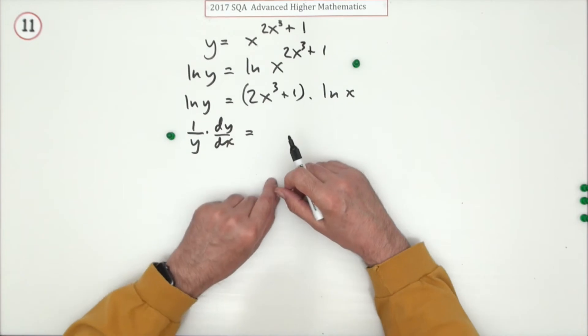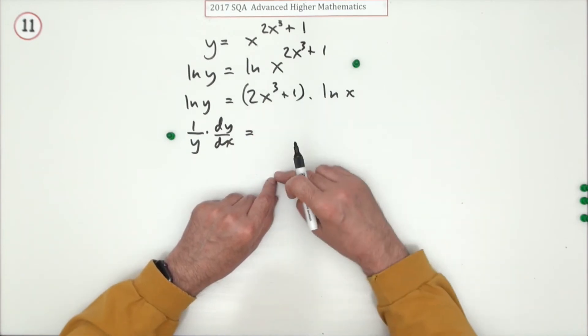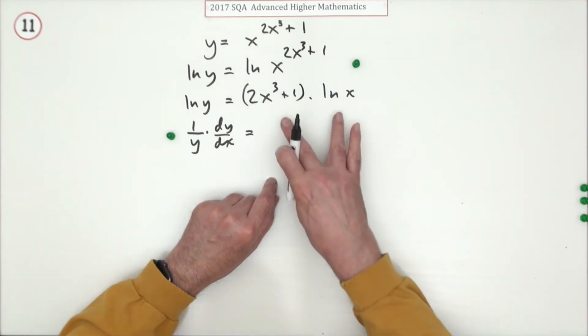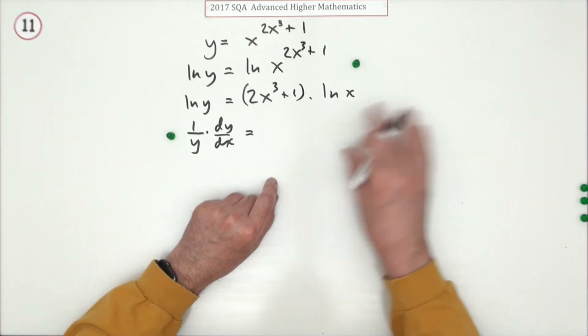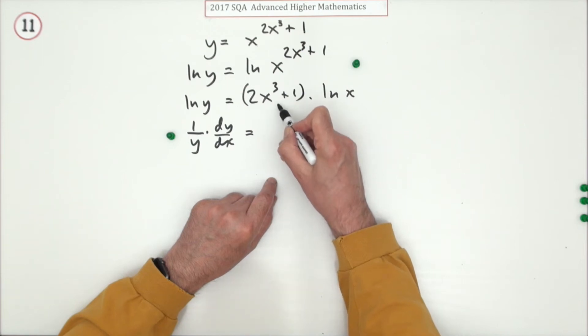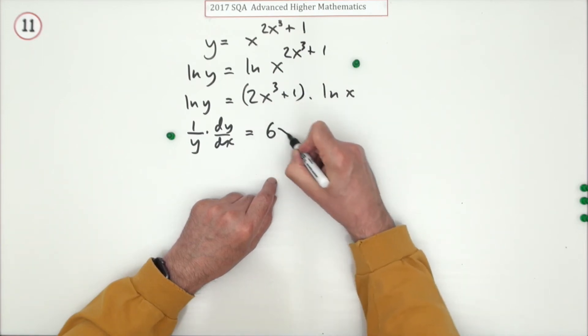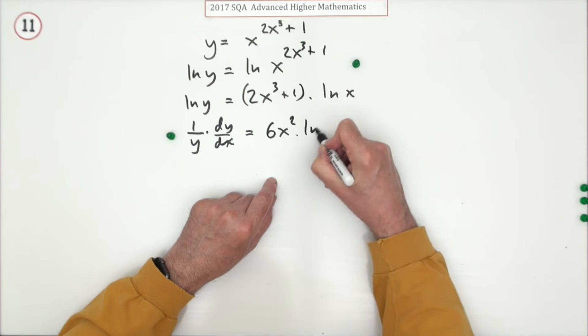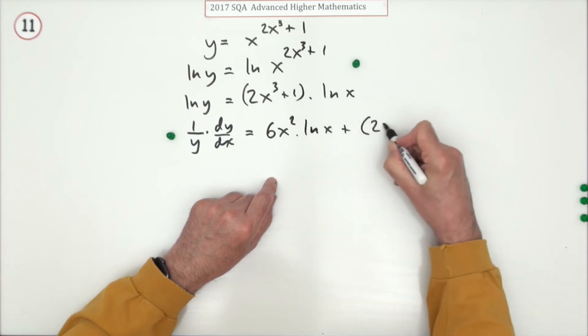Now you've got the product rule here, so there's going to be two marks, one for doing one part, one for doing the other. So I'll just do the order I usually do it in. Just take their turn. So differentiate this first, that's going to be 6x squared multiplying ln x.